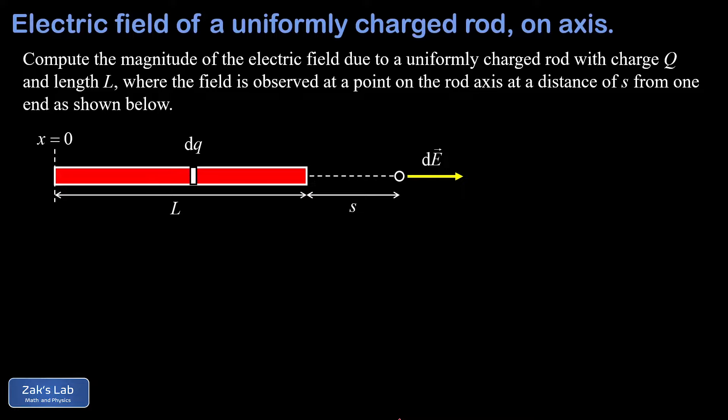Now to find the electric field at this observation point we want to break the rod into infinitesimal little charge increments and we'll call those dq's. Note that each dq will give us a rightward contribution to the total electric field at the observation point and we call that contribution to the electric field dE.